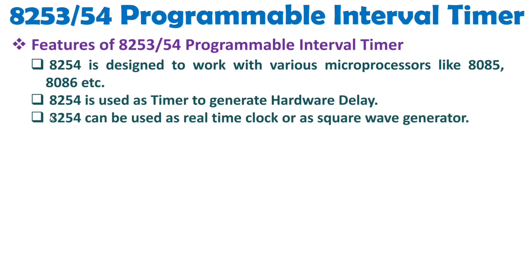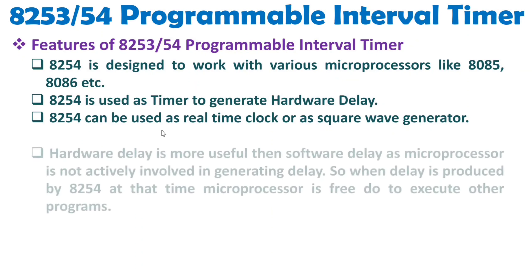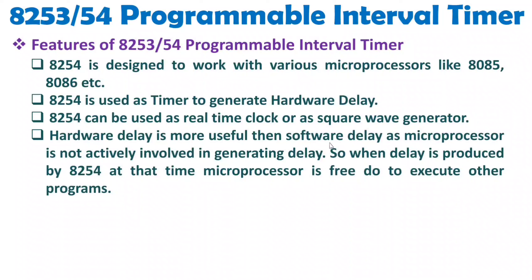When we talk about 8254, it can be used as a real-time clock as well as for square wave generation. Hardware delay is more useful than software delay because the microprocessor is not actively involved in generating the delay. In software delay, the microprocessor was executing instructions and was actively busy. But in hardware delay, the microprocessor is not generating the delay — it is generated by 8254.